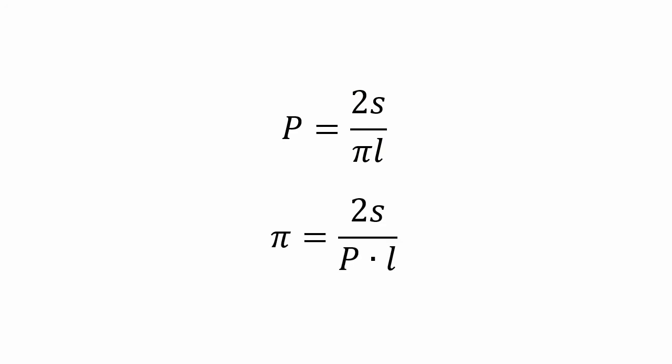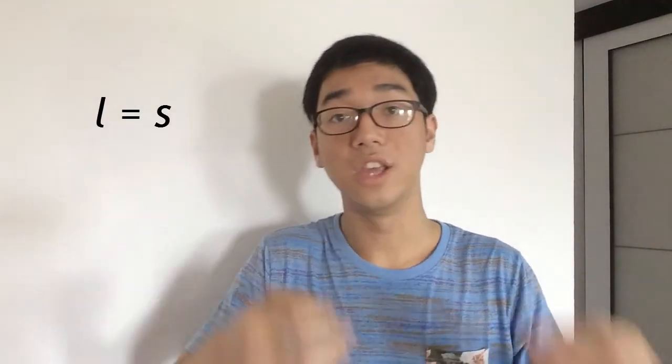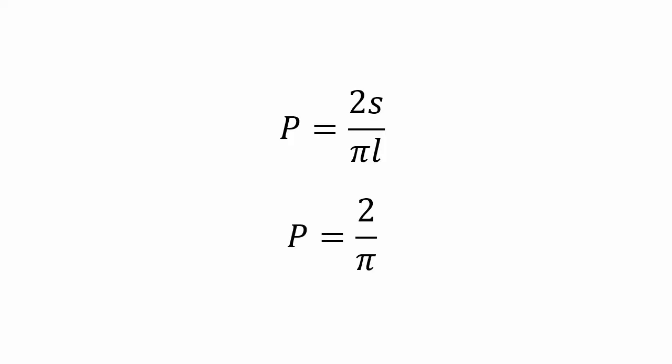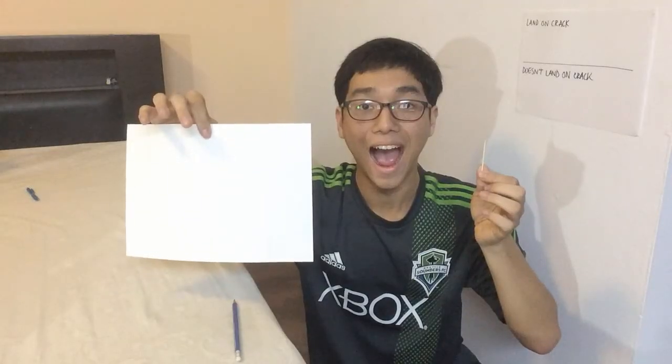That's the answer to Buffon's needle problem. But there's one really interesting bit to consider: I can find this probability experimentally by tossing the stick and counting how many times it lands on a line. Since I know L and S, I can rearrange the equation to solve for pi. To make things simple, I'll set the distance between lines equal to the length of the stick so L equals S, making the probability equal to 2 over pi, which is much simpler to work with.